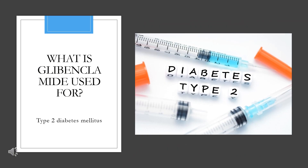What is Glibenclamide used for? Glyburide is indicated alone or as part of a combination product with metformin, as an adjunct to diet and exercise, to improve glycemic control in adults with type 2 diabetes mellitus.